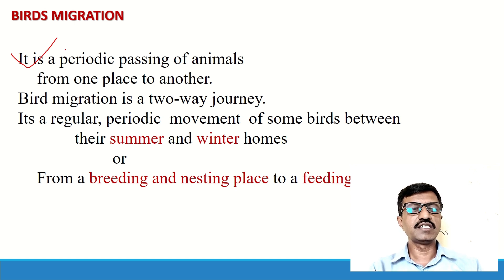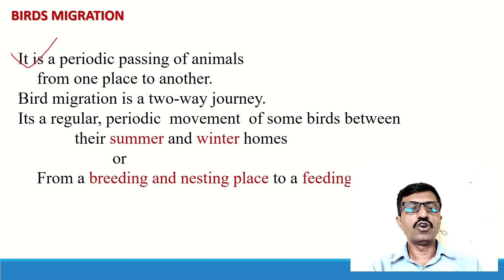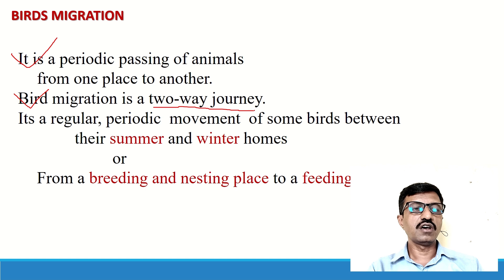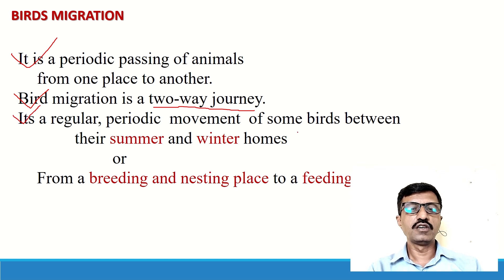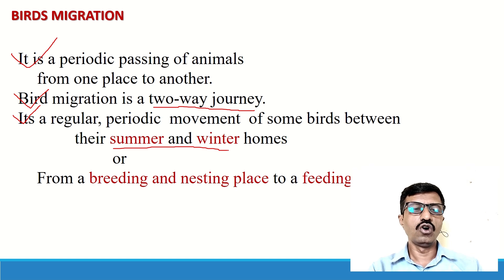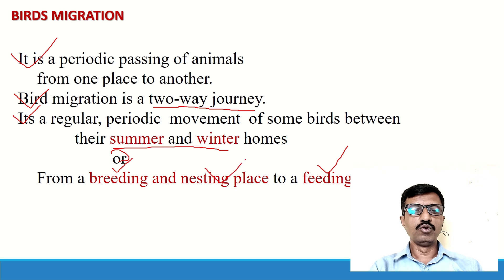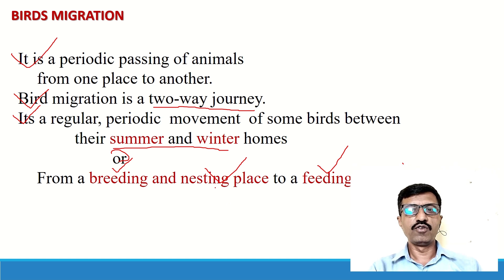In the case of birds, birds also migrate — they travel from one place to another. Bird migration is like that of other animals: it is a two-way journey. It is a regular, periodic movement of some birds between their summer and winter homes, or from breeding place to feeding place, or from nesting place to resting place. This takes place regularly, as some species of birds migrate year after year.